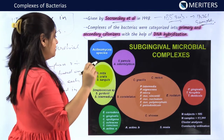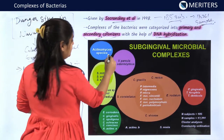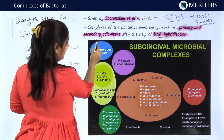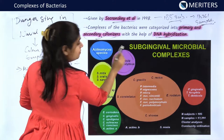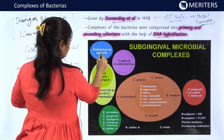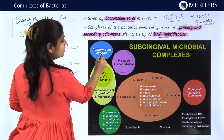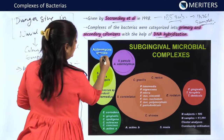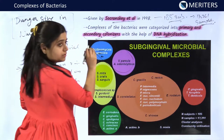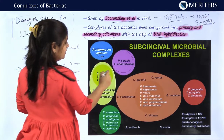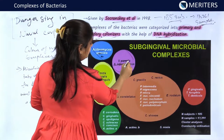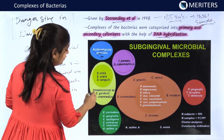The first complex is the purple complex. This consists of Actinomyces species. Strain A of Aggregatibacter actinomycetemcomitans is associated with this, along with Actinomyces odontolyticus and Veillonella parvula.